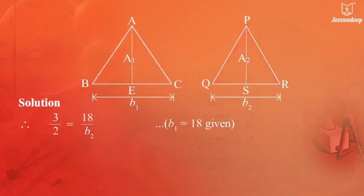Putting the values in the equation, we get 3 upon 2 equals 18 upon B2.